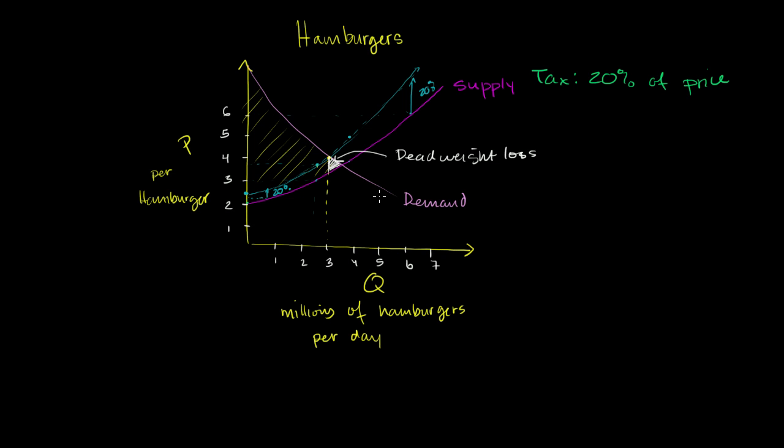And if you look at the revenue that the government will now have, it will still be this quantity. So it looks like our equilibrium quantity is now 3 million hamburgers per day, which is about what we got in the last one. And obviously I'm not doing this very precisely. And it's going to be $0.60. So 20% times $3 is $0.60. So the height is going to be $0.60.